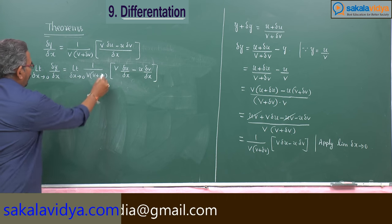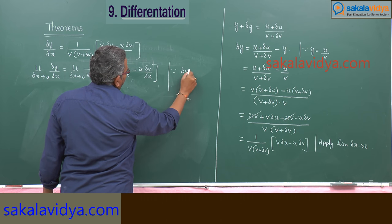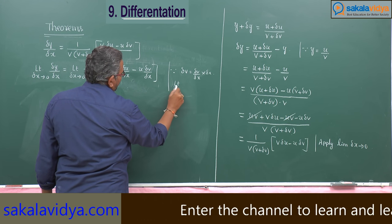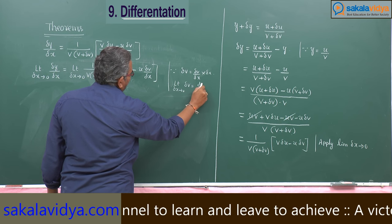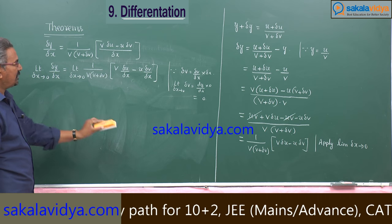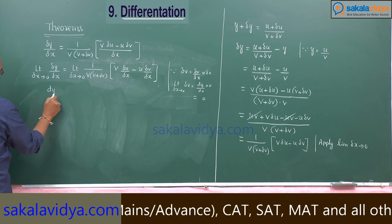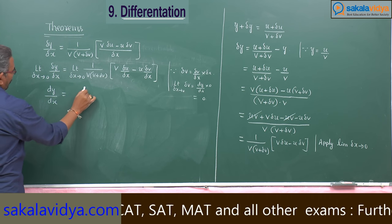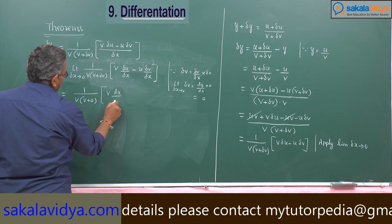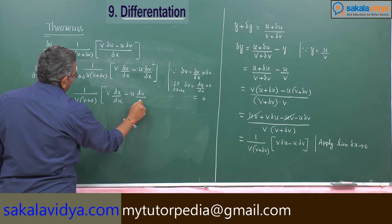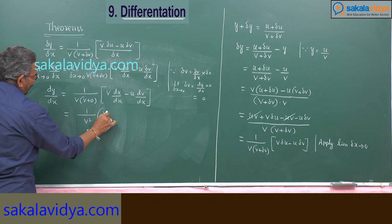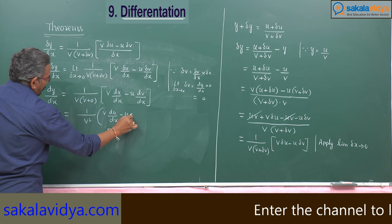Now, delta v can be written as (delta v by delta x) times delta x. If you apply the limit as delta x tends to 0, this delta v equals (dv/dx) times 0, which is 0. So if you apply the limit, delta v becomes 0. This gives dy/dx equal to 1 over v(v plus 0), so 1 over v squared, times v*(du/dx) minus u*(dv/dx). This equals 1 over v squared into v*(du/dx) minus u*(dv/dx).